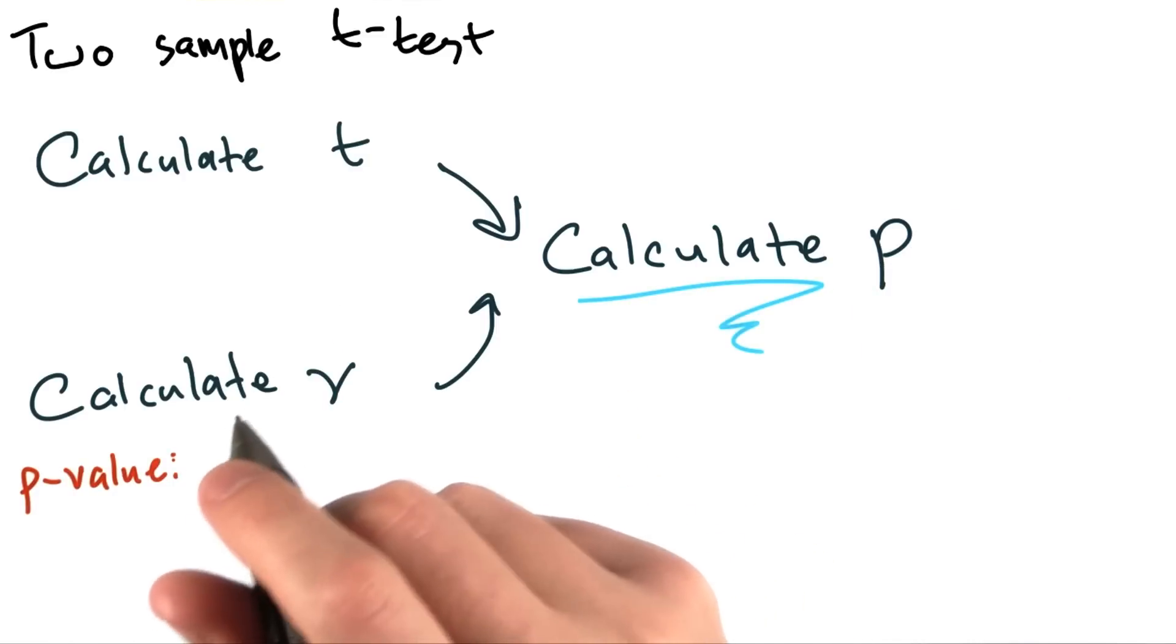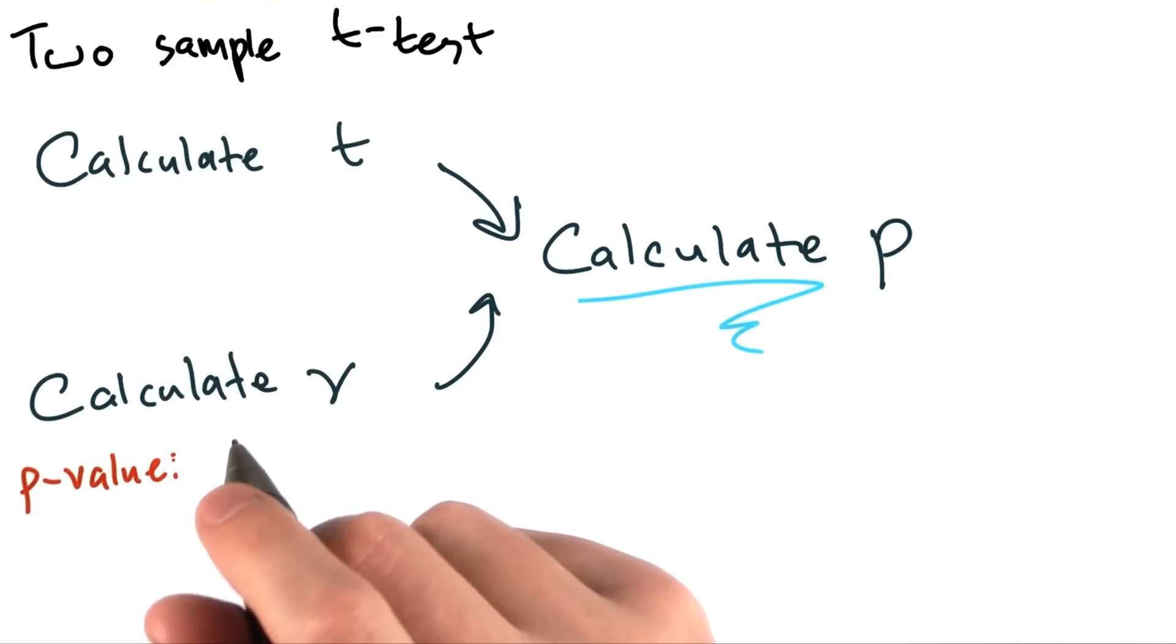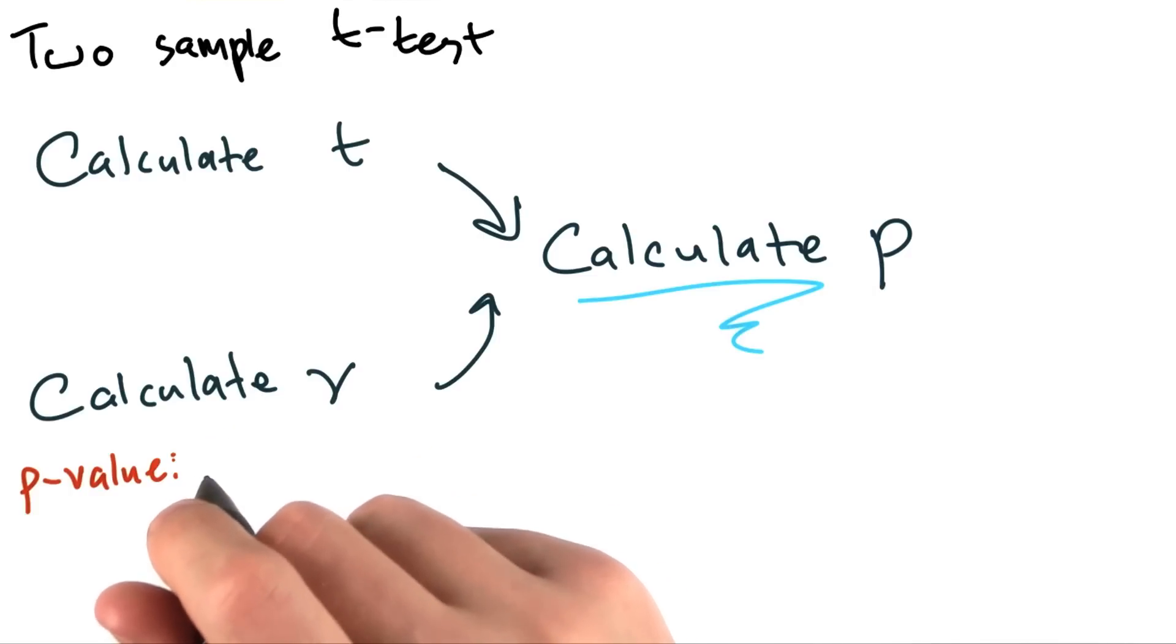Conceptually, the p-value is the probability of obtaining a test statistic at least as extreme as the one that was actually observed, assuming that the null hypothesis was true.